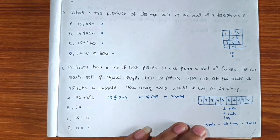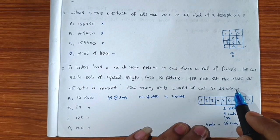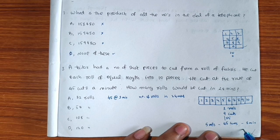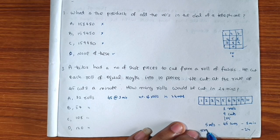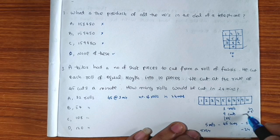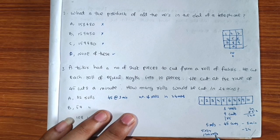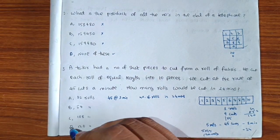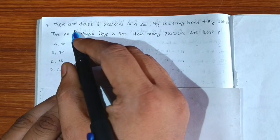In one minute he cuts 5 rolls. So in 24 minutes he cuts 5 × 24 = 120 rolls. The answer is option D: 120 rolls.